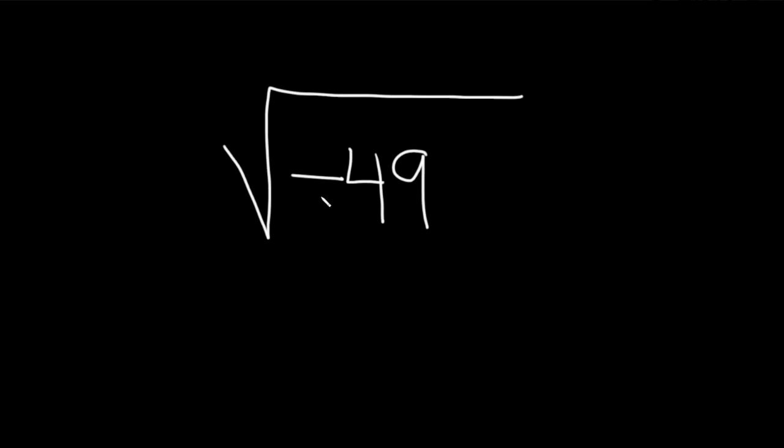Whenever you have a problem like this and there's a negative in the square root, you want to automatically turn that into an i. This becomes i, and then times the square root of 49.